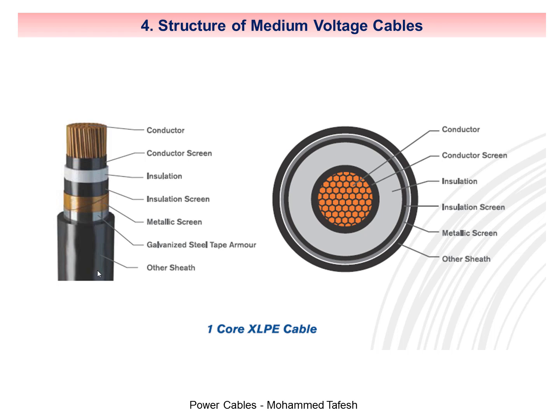The last layer is the outer cover PVC jacket. It is made of PVC materials — chemically inert materials that do not react. It is the last layer of the cable that protects the cable from external environmental influences and acts as a barrier from air and water. Manufacturers write important information on the outer cover, such as the name of the manufacturer, cable size, cable type, design standard, rated voltage, and serial numbers.